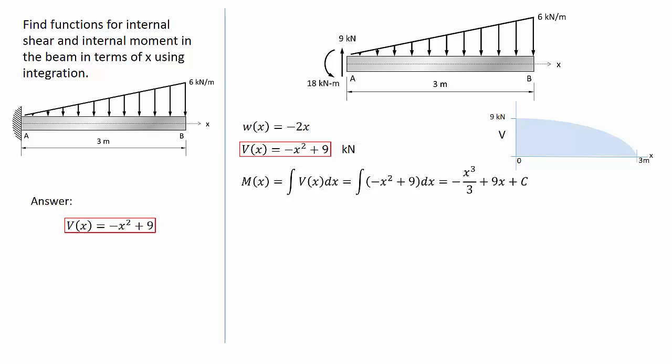Now, I will solve for that constant by using the boundary conditions for the moment function. Here is a rough approximation of what the moment diagram looks like for this beam. I know out at end B, the cantilever at free end, the moment must go to 0.